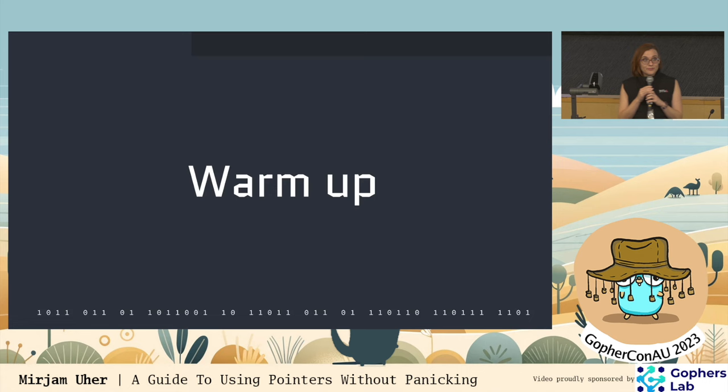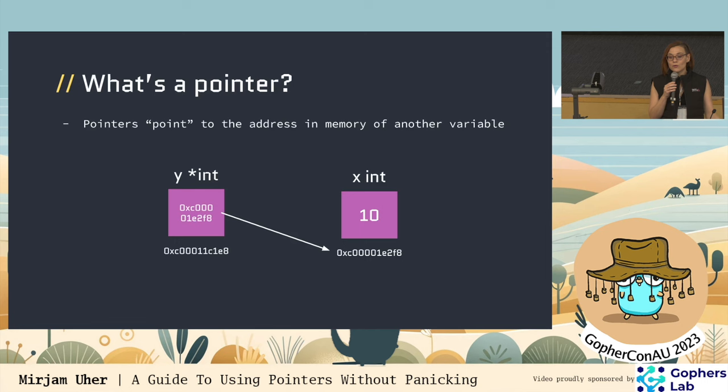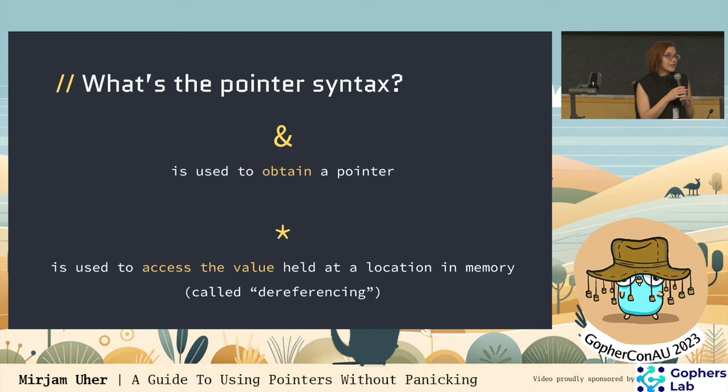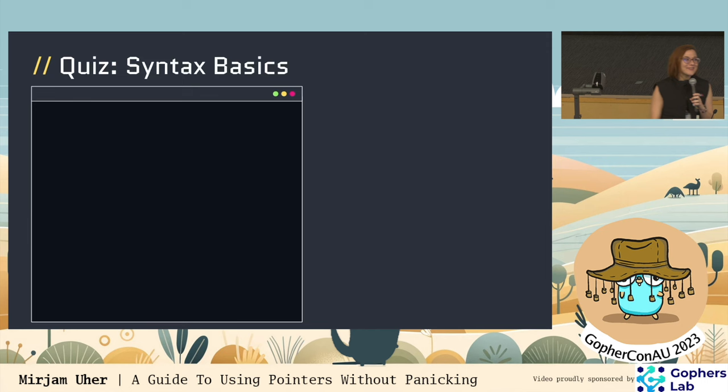So what is a pointer? A pointer points to the address in memory of another variable. Up here we have Y, which is of type pointer to int, and it holds the address of X, which is of type int. How do we make a pointer? We use an ampersand — you put an ampersand in front of an existing variable in order to obtain its pointer, and then you can store it in another variable. And you can use a star in front of a pointer in order to access the value held at that location in memory — that's what we call dereferencing.